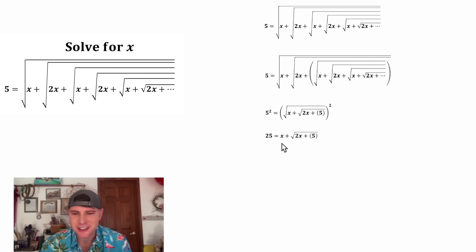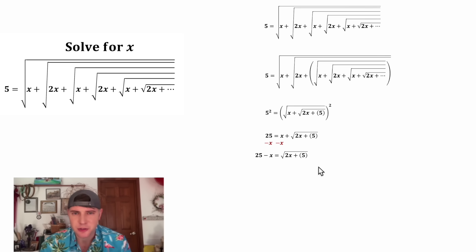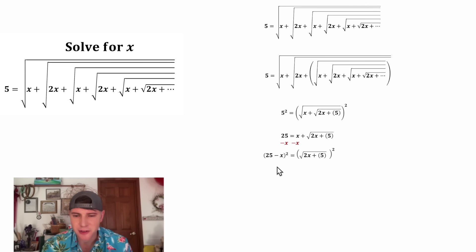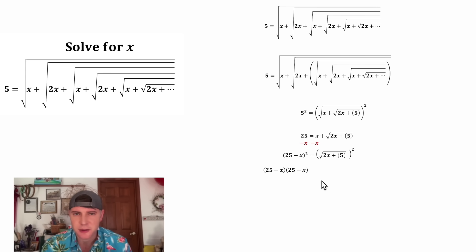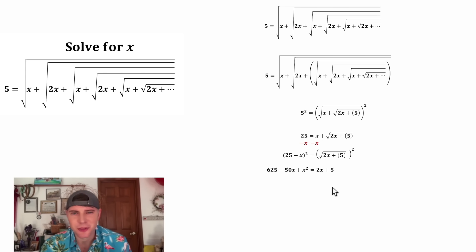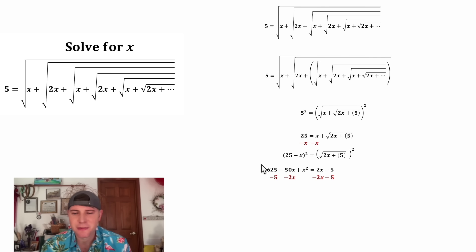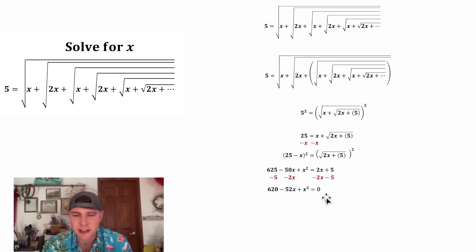Let's get this square root alone on one side. Let's subtract x from both sides. On the left-hand side we have 25 minus x, and on the right-hand side we have the square root all by itself. Now to get rid of this square root, let's square both sides. On the left-hand side, the quantity (25 minus x) squared gives us 25 minus x times 25 minus x, which multiplies out to 625 minus 50x plus x squared. On the right-hand side, the square root and the square cancel. Now we have a quadratic. Let's set it equal to zero by subtracting 2x and subtracting 5 from both sides.